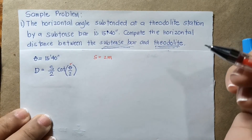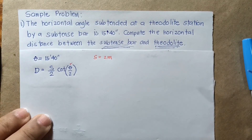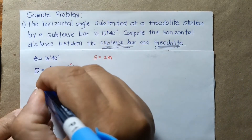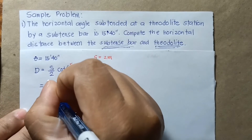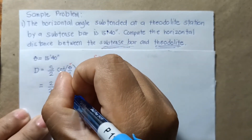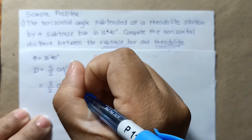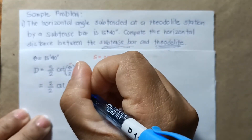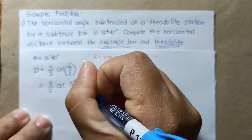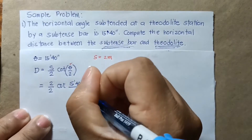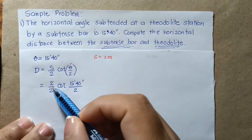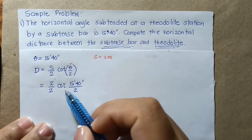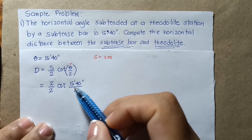If the problem does not state the length of the substance bar, then we use 2 meters. Substituting into the formula, we have 2 over 2, then cotangent of 15 minutes 40 seconds over 2. Of course, 2 over 2 becomes 1, leaving us with cotangent of 15 minutes and 40 seconds over 2.